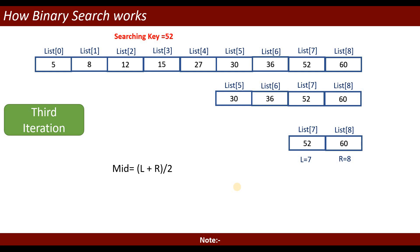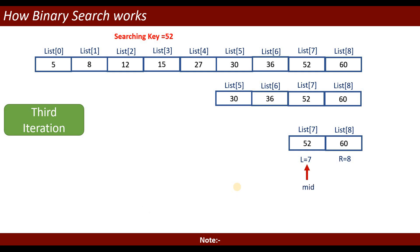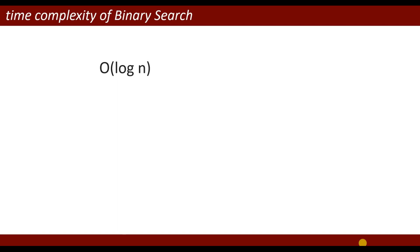In the third iteration, left is on index 7 and right is on index 8. We calculate mid: 7 plus 8 divided by 2 is 7.5, so mid points to index 7. It checks: is 52 equal to 52? Yes, it is true. It returns the mid index, which is 7 — the key is found. The time complexity of binary search is O(log n).